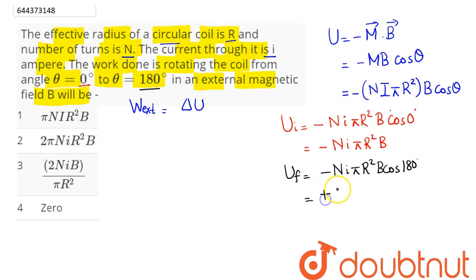Hence this comes as plus N into I into pi into R square into B. So the change in potential energy here can be written as final minus initial that is N I pi R square B minus initial here is minus of N I pi R square into B.